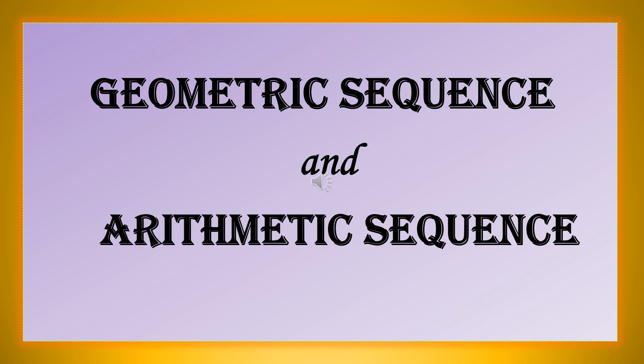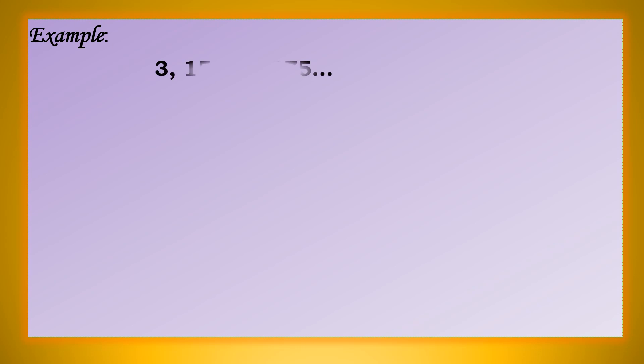What is the difference between a geometric sequence and an arithmetic sequence? For example, given 3, 15, 75, 375, and so on.